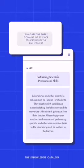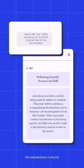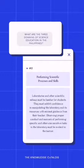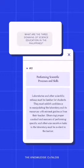The second domain is performing scientific processes and skills. We have to add the word 'confidently' here. Laboratories and other scientific milieus must be familiar for students — they shouldn't feel like foreigners in science labs. They should be accustomed to entering them and know the proper demeanor required inside a laboratory. While doing an activity or investigation inside the laboratory, they must exhibit confidence in manipulating the entire space and everything found inside it and its resources, with minimal guidance from the teacher.